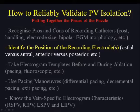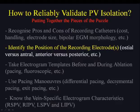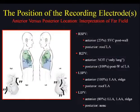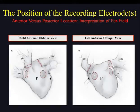Second, and really important for the PVAC catheter, is that you have to identify the position of the catheter and its electrodes at any point during the procedure. You have to know whether you are mapping more ostially or more anterally, and whether the electrodes are facing the anterior wall or the posterior wall, because it is relevant to be sure about which wall you are mapping.